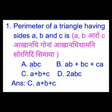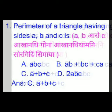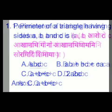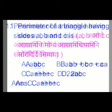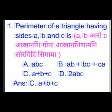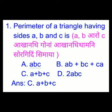The perimeter of a triangle having sides A, B and C — we have four options and the answer is option C: A plus B plus C.